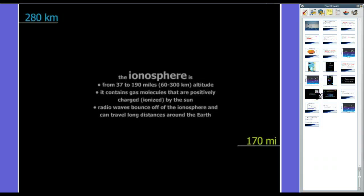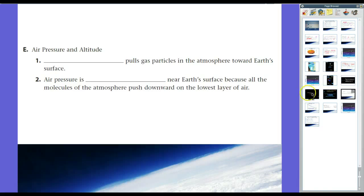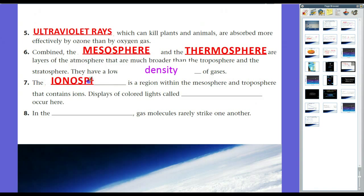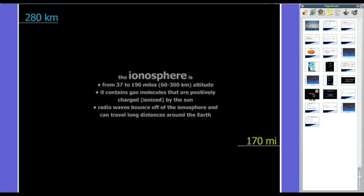And, so, let's go ahead and let's talk about the ionosphere for a second, which we'll get into right here. The ionosphere is a region within the mesosphere and thermosphere that contains ions. Displayed colored lights called auroras occur here. The aurora borealis in the northern hemisphere. The aurora australis in the southern hemisphere. The northern lights. The ionosphere is from about 60 to 300 kilometers in altitude. It contains ionized molecules. And, they're ionized by radiation from the sun. Radio waves. Scientists figured out shortly after radio waves were discovered and radio was invented, that you could actually bounce radio waves off of the ionosphere. And, if you bounce them off the ionosphere, you get really long range with the radio.